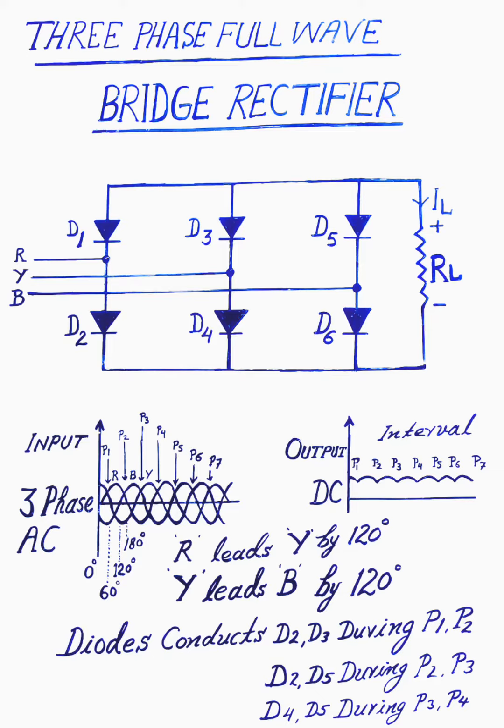The incoming supply is three-phase: R, Y, B phase. All three phases are separated by 120 degrees. R phase leads Y phase by 120 degrees, and Y phase leads B phase by 120 degrees, as you can see in the diagram.